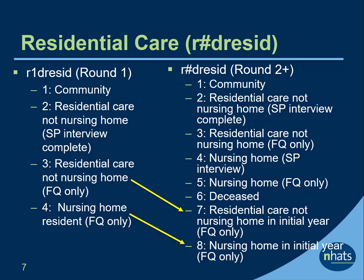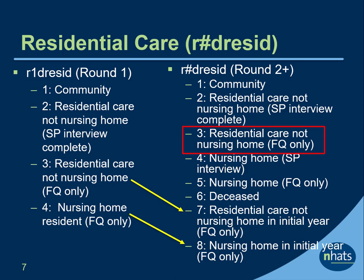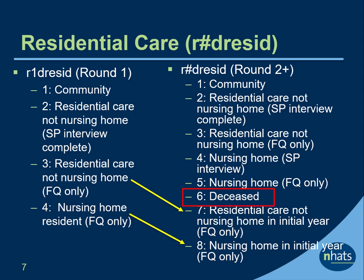In rounds 2 and later, an expanded set of codes is available for the RESID variable. A code of 1, community resident, and a code of 2, residential care case with a completed SP interview, take on the same meaning as in round 1. In addition, four new codes appear beginning in round 2. Code 3 means the sample person resided in residential care but only had an FQ or facilities questionnaire, and when they entered NHATS they had an SP interview. Codes 4 and 5 identify individuals who transferred into a nursing home setting after they entered NHATS—code 4 means they completed an SP interview and code 5 means they only had an FQ interview. Code 6 indicates a deceased SP with a completed last month of life interview. Cases that were code 3 in round 1 are coded 7 in subsequent rounds; these are residential care cases that only had an FQ in round 1 and were never eligible for an SP interview.